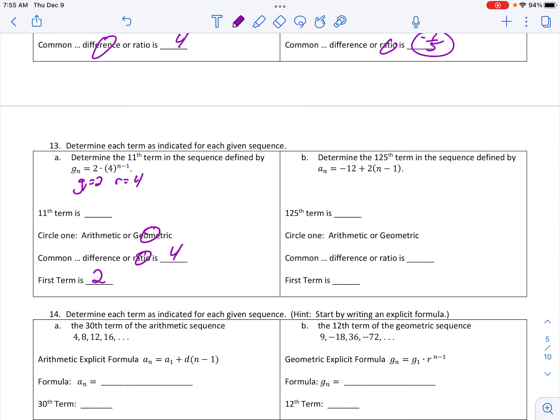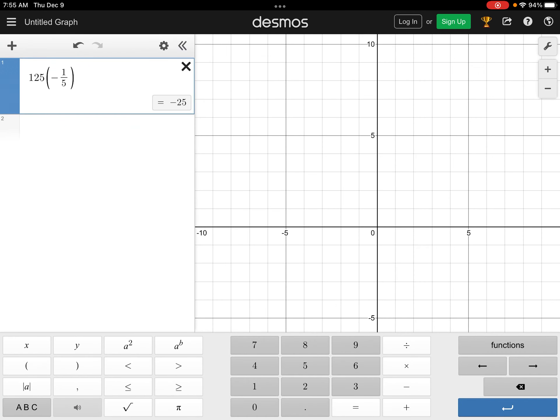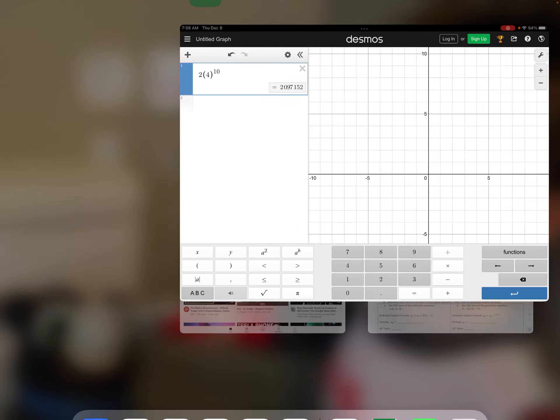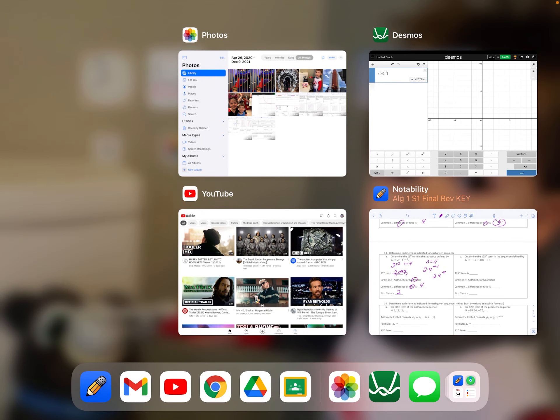Now, to find the 11th term, I'm going to go into my formula and say 2 times 4 to the N, which in this case is 11, minus 1. So now I'm going to go to my head and say, what's 11 minus 1? 10. I'm going to type in 2 times 4 to the 10th. So when I go and do that, I get a pretty large number: 2,097,152.